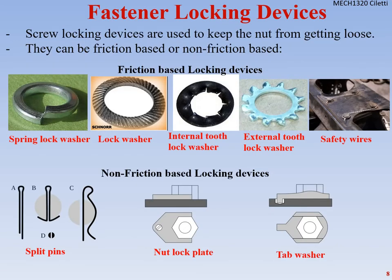We also have fastener locking devices to keep nuts or bolts from loosening. Friction-based locking devices include: spring lock washers, which are split and spring down to create friction as you tighten; internal and external tooth lock washers; and safety wires, where turning one way tightens the other so they tighten each other back and forth.